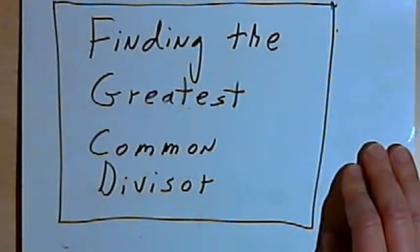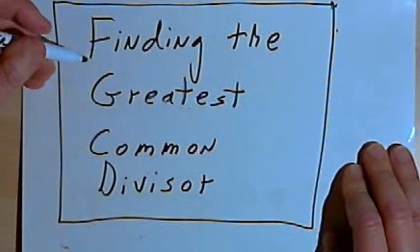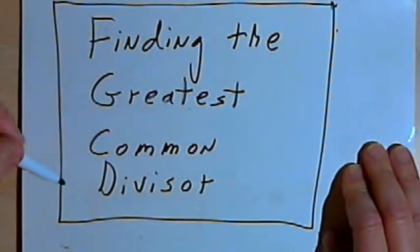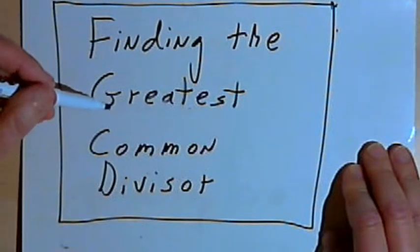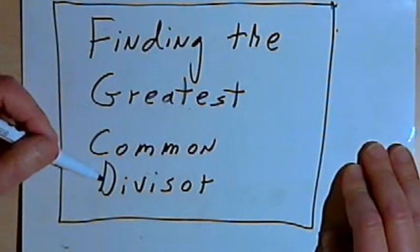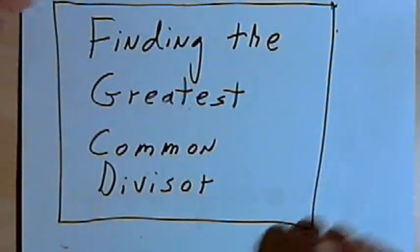This video is provided as supplementary material for courses taught at Howard Community College. In this video I want to talk about finding the greatest common divisor of two numbers. This is sometimes called the greatest common factor. Both those terms mean the same thing.